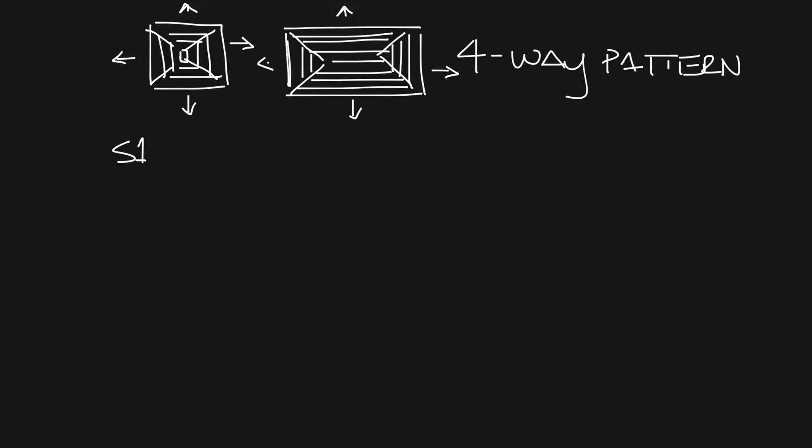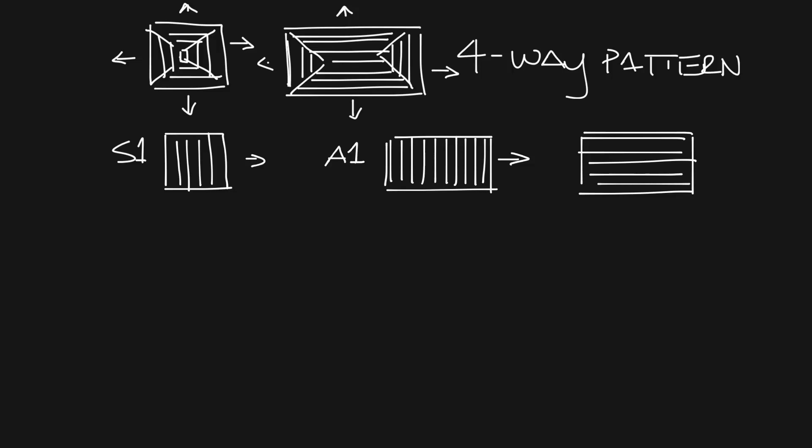Our S1 pattern is a square one-way and it looks like this. Our A1 pattern is a rectangular one-way pattern that looks like this with the air coming out the short side. You can also get the airflow in the long dimension and that's called our B1 pattern.